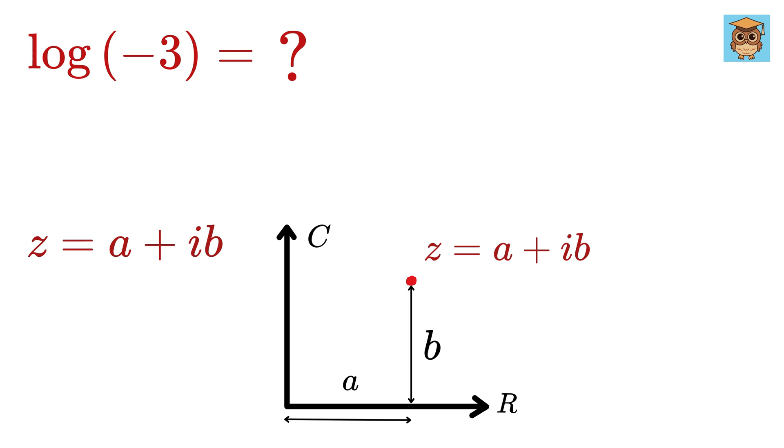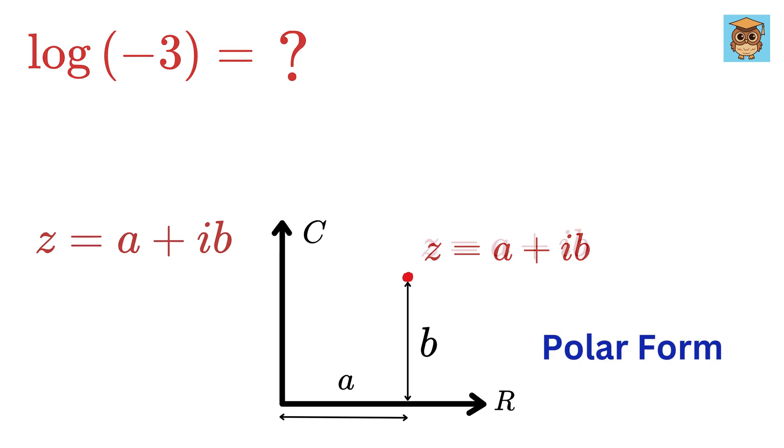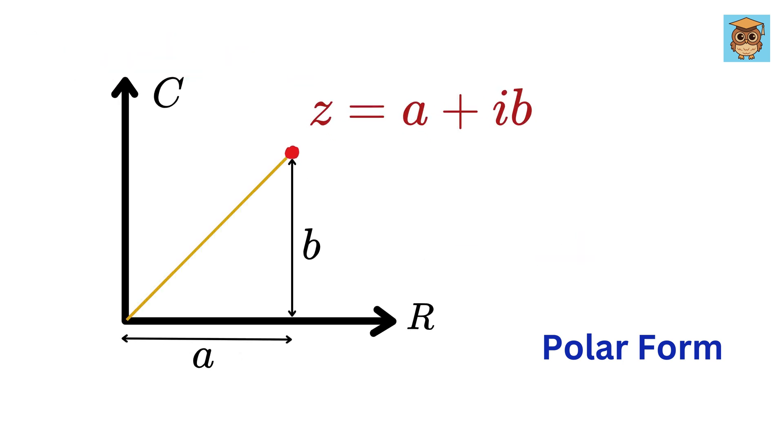Another way to look at this is by considering its polar form. Draw this line. Let this be of length r, and this be the angle theta. What will be the value of a and b in terms of r and theta? a will be r cos theta, and b will be r sine theta.